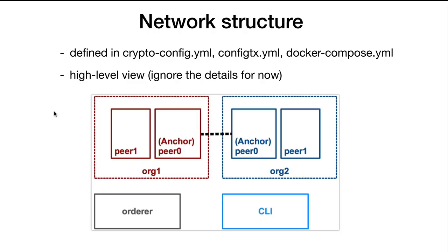The network itself is a very simple network which has two organizations, org1 and org2. Each organization has two peers, and one of those peers is the so-called anchor peer. An anchor peer is a special kind of peer that allows communication with other organizations. Then there's the orderer service, which is a central part of Hyperledger and responsible for creating consensus in the blockchain. And there's a special CLI node which allows the script to send commands directly to the network.